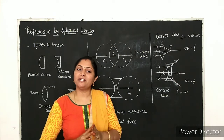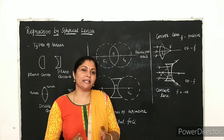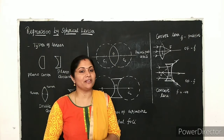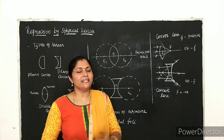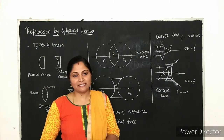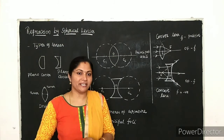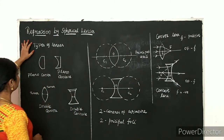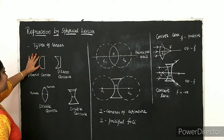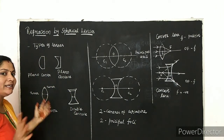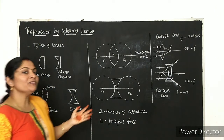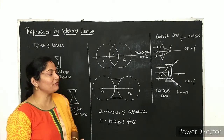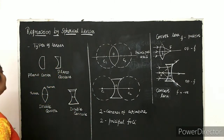So in lenses, what are the different types? There are many types of lenses, but the main types — we have especially four types of lenses, and among them there are two main types.